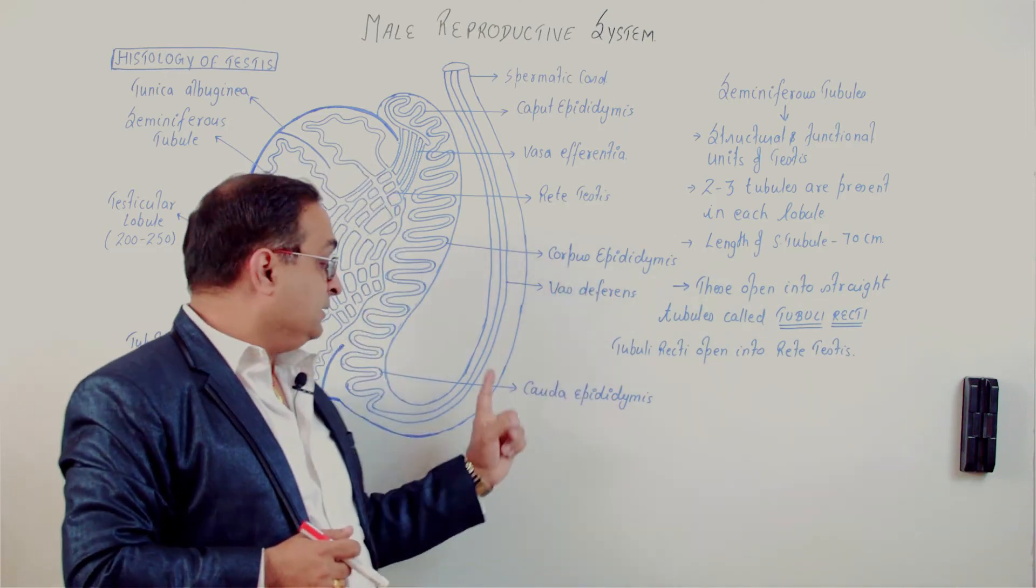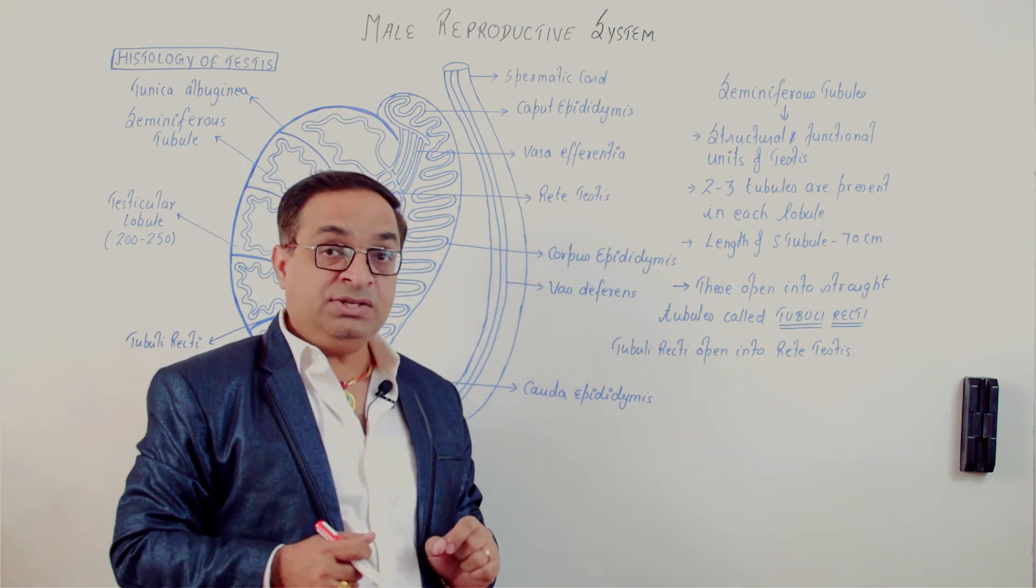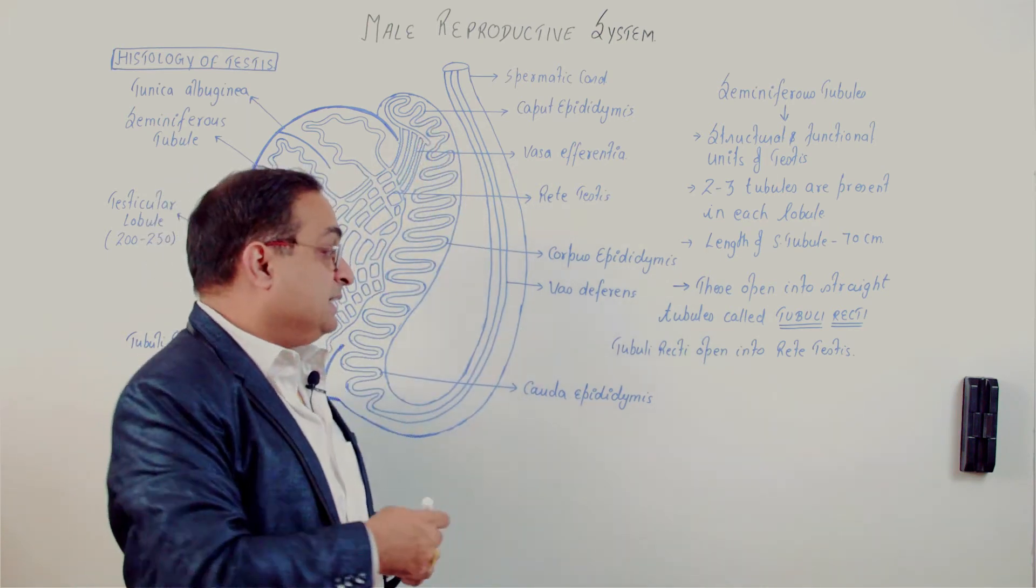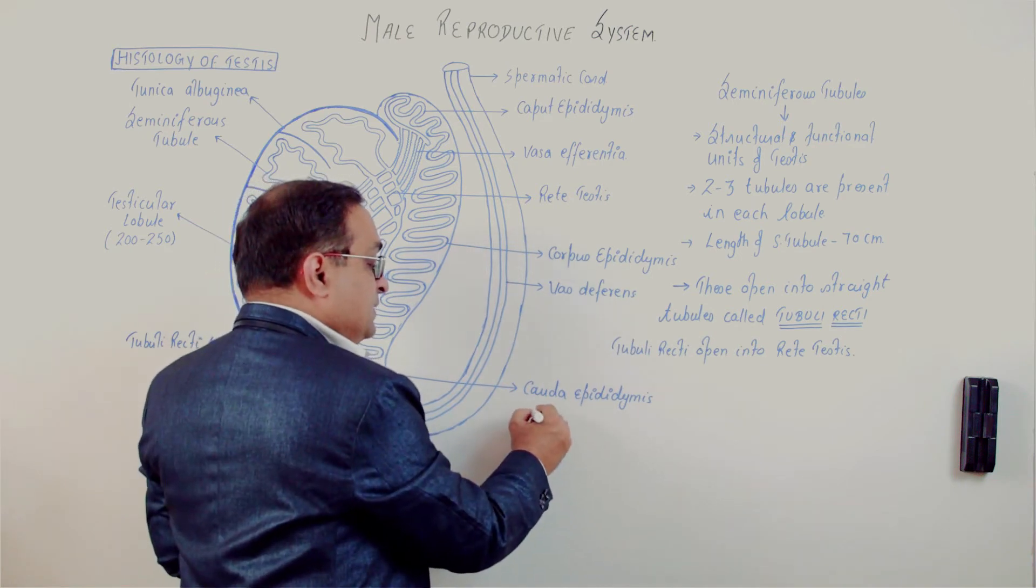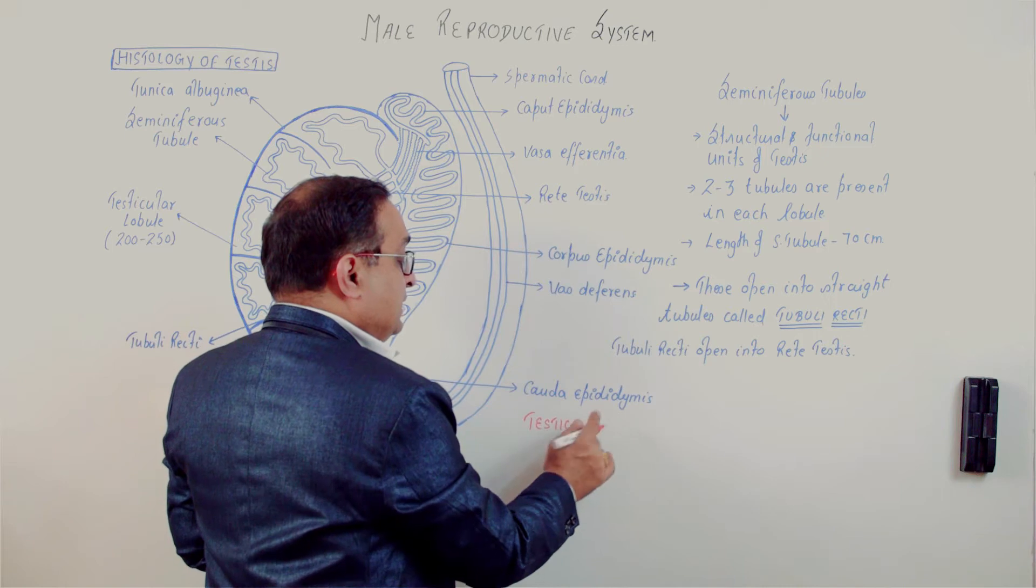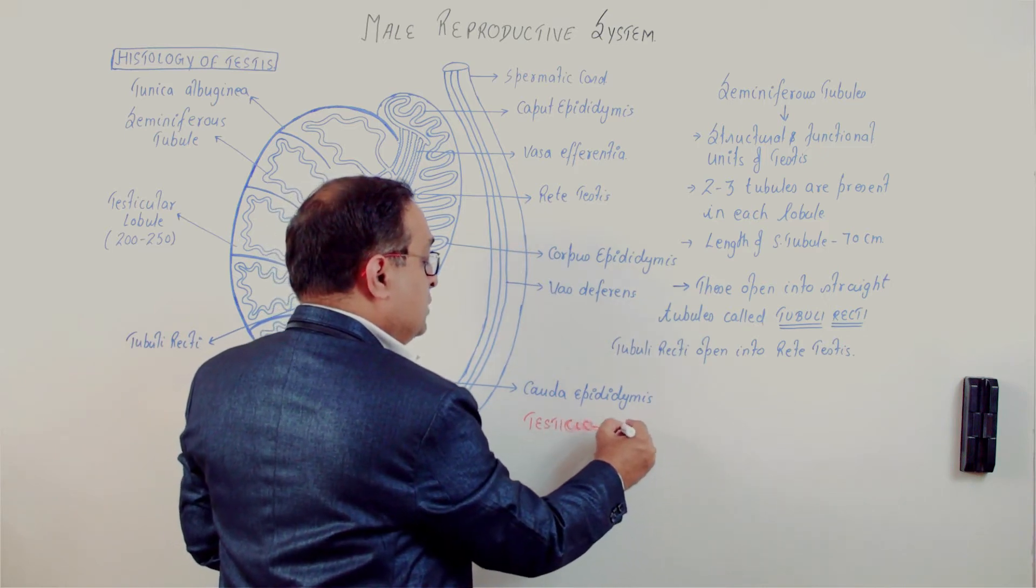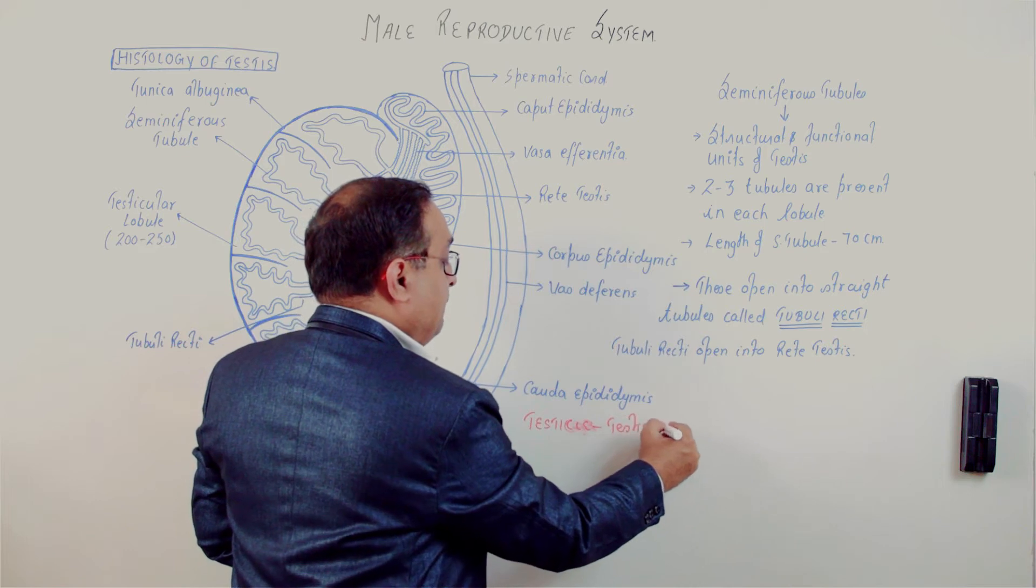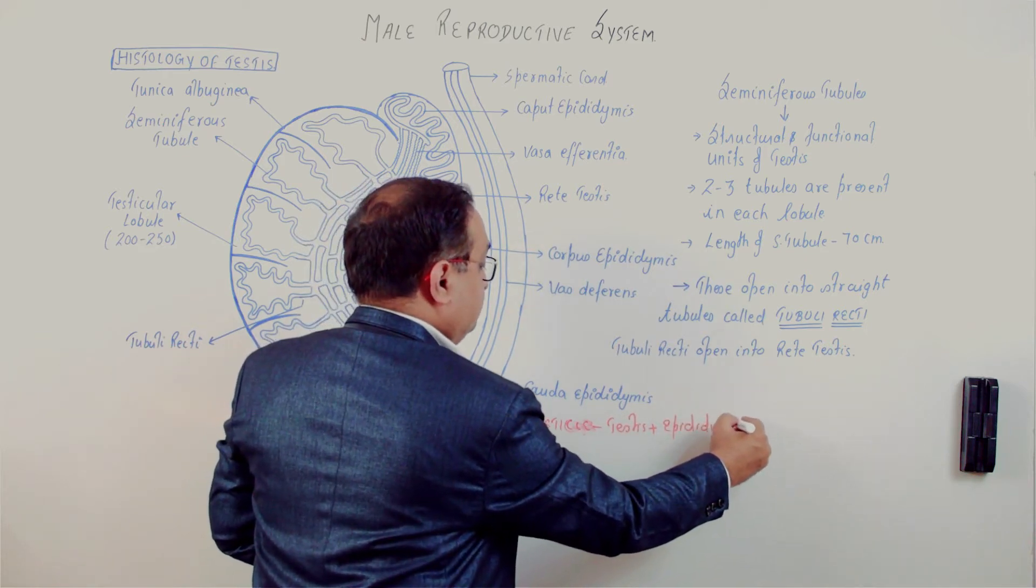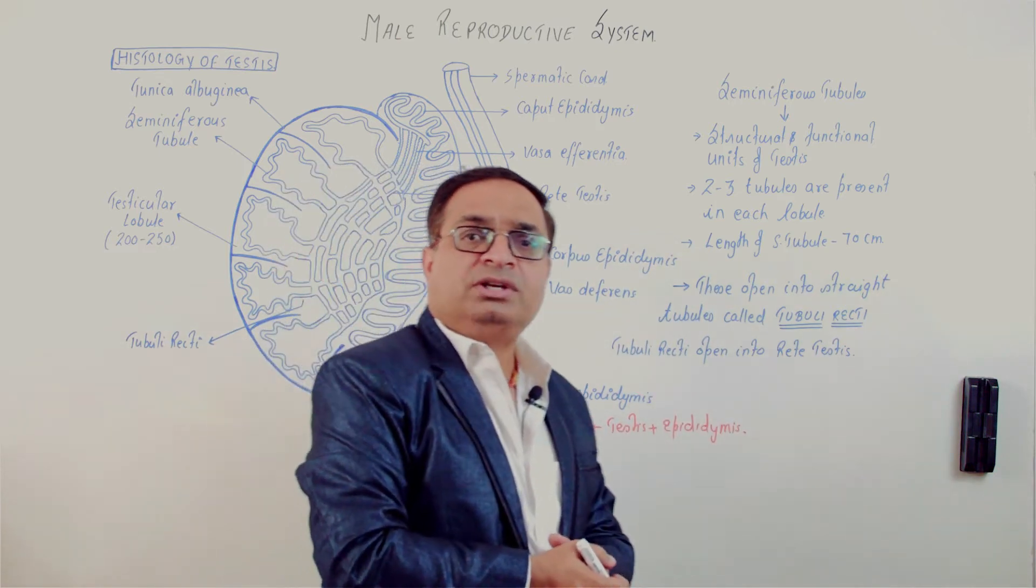I'll repeat: vasa efferentia open into epididymis. Testes plus epididymis is called testicle. So when we use the term testicle, it's referring to testes plus epididymis. Weight of one testis is nearly 14 grams.